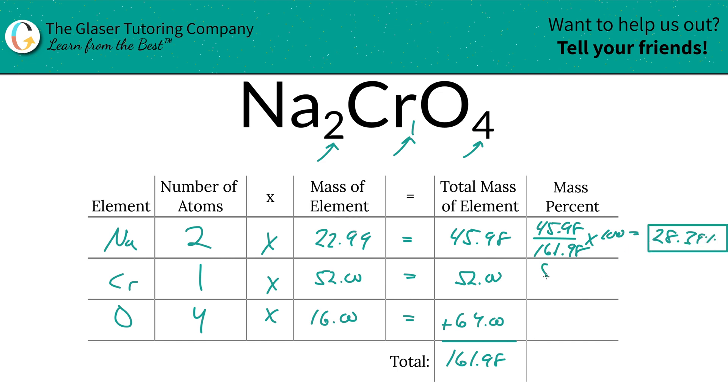Next is for chromium, take the total mass of the chromium 52 divided by the total mass of the entire compound, 161.98. Multiply that by 100. And the percentage here will work out to be about 32.10%. There you go.